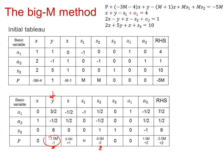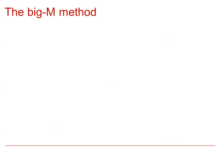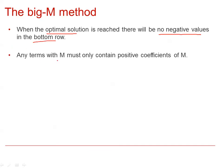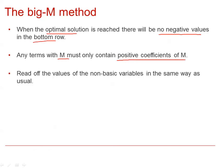We are not going to go through any more iterations as it would take a long time, but you should refer to your textbook for further examples of fully worked solutions. When the optimal solution is reached, there will be no negative values in the bottom row, meaning any terms with M must only contain positive coefficients of M. You then read off the values of the non-basic variables in the usual way.